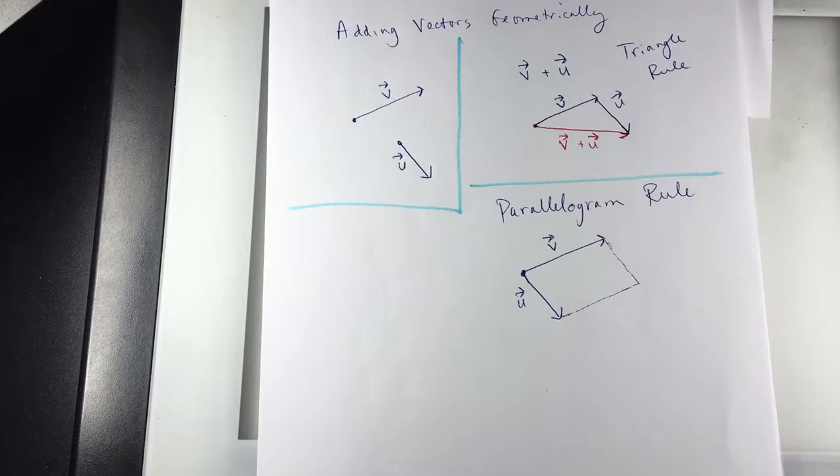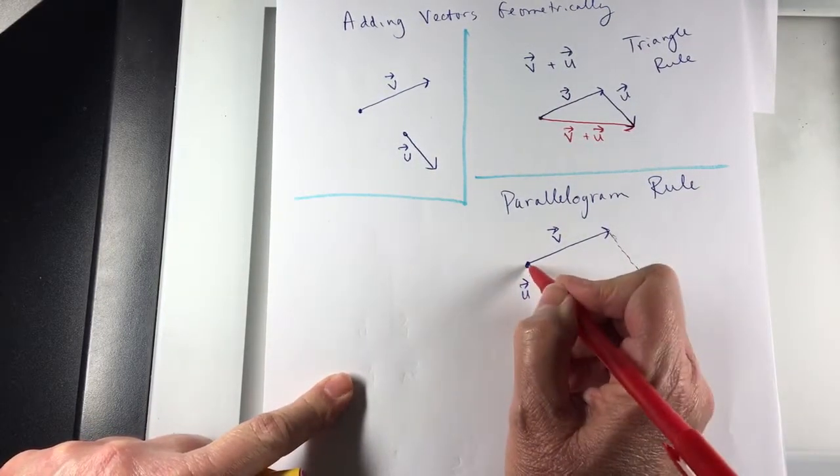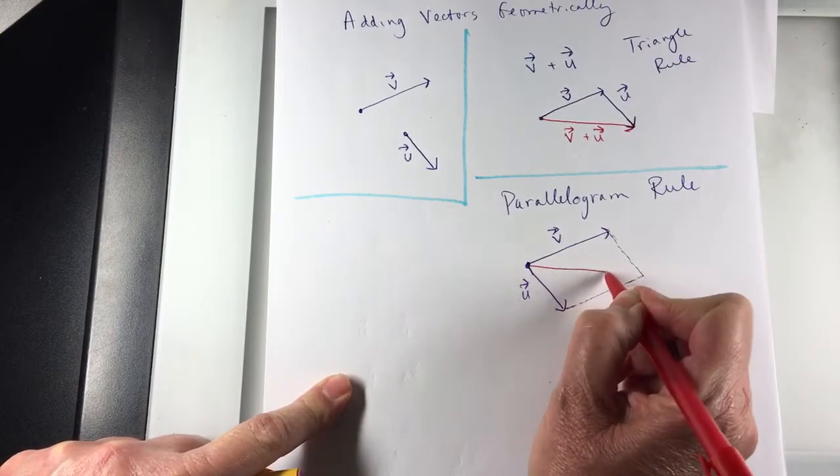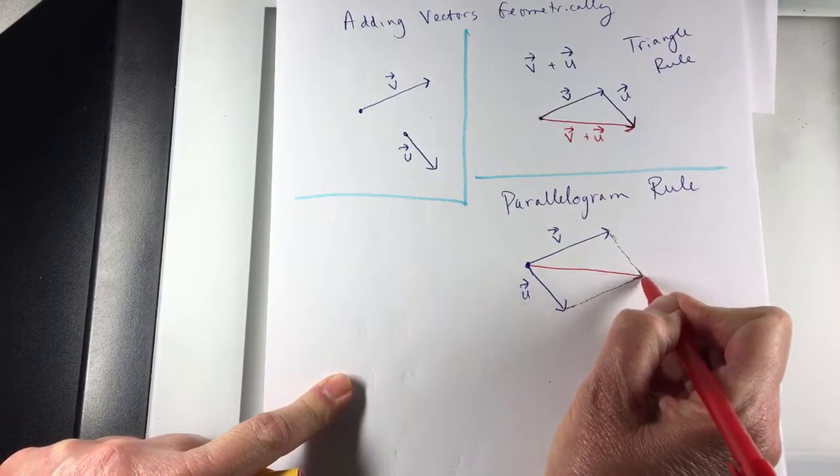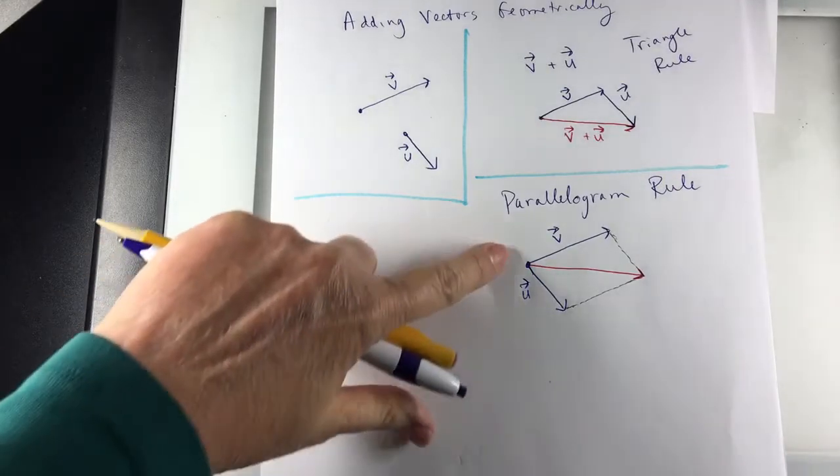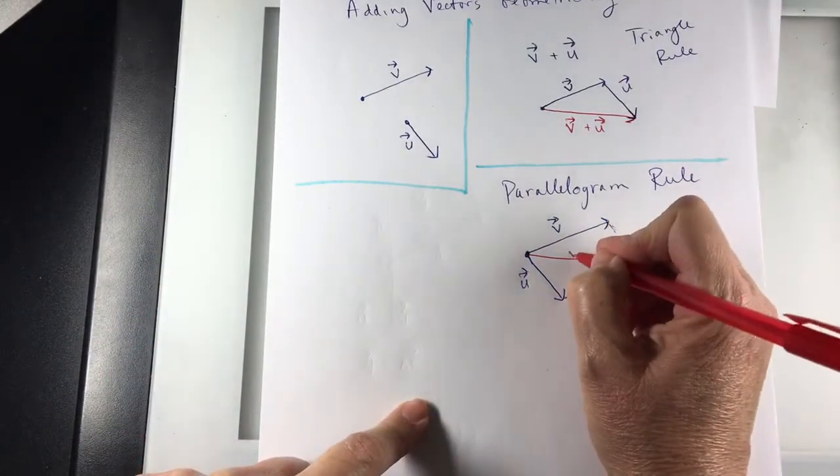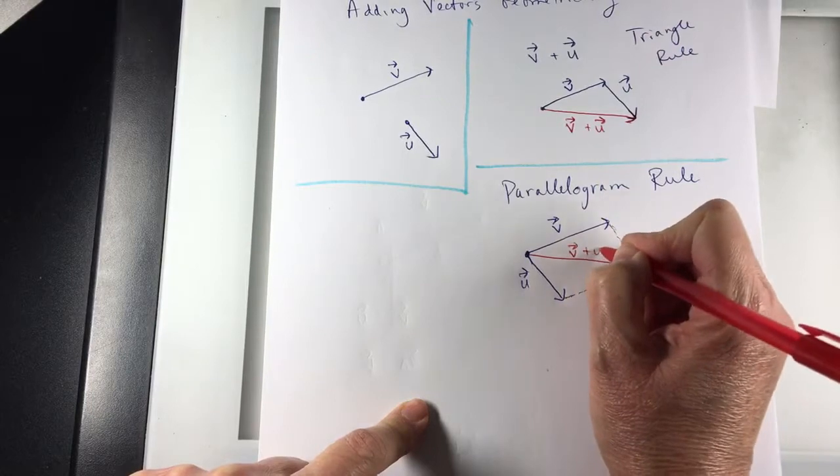And then the addition of the two vectors, V plus U, is going to be the diagonal. It's a diagonal, it's a vector, but it'll be the diagonal that goes from the initial point to the other side. V plus U.